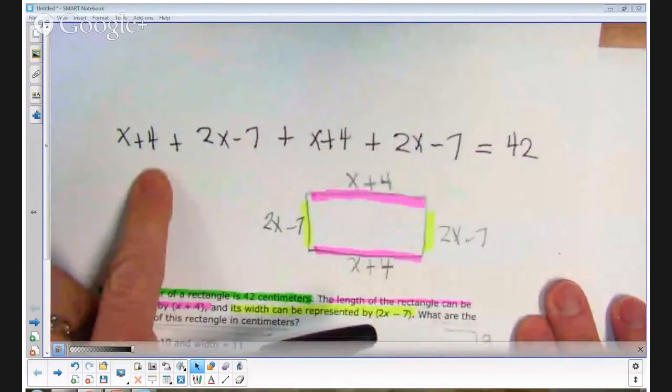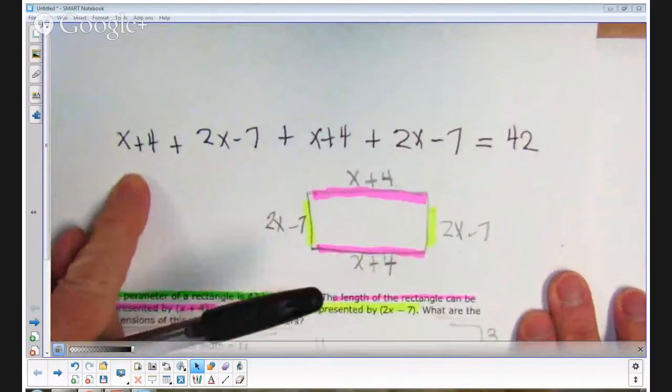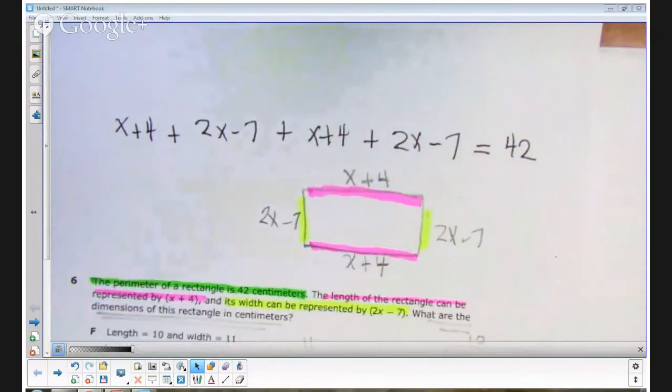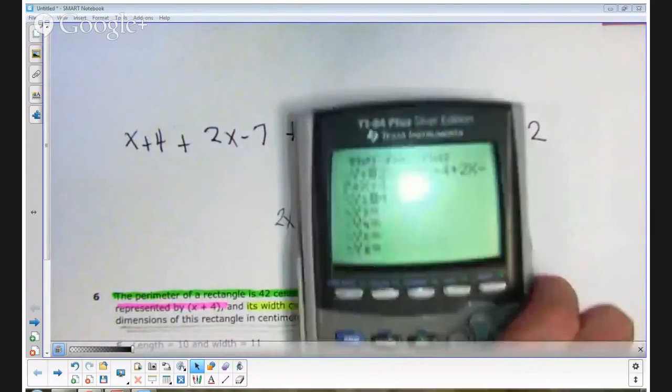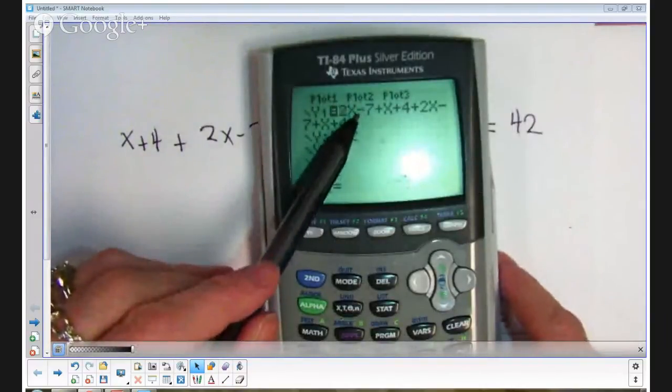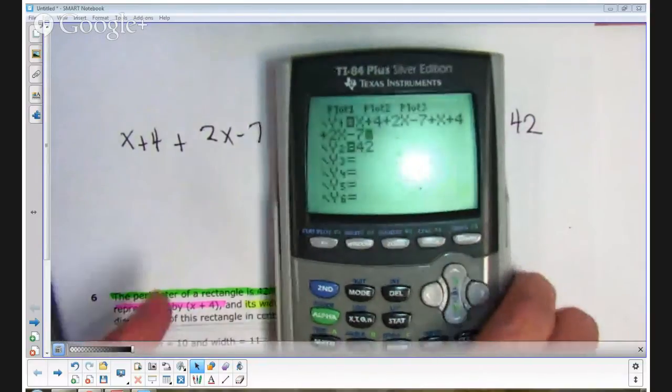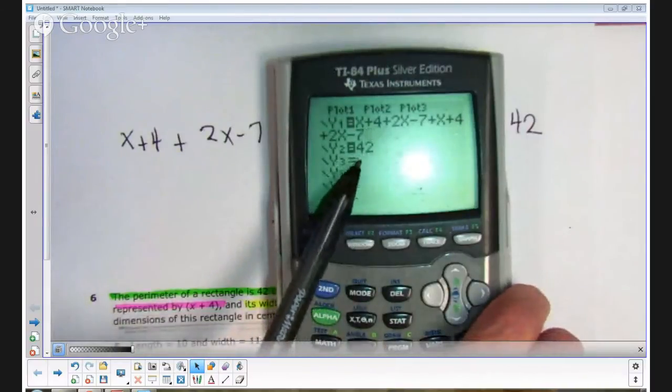Now how can I solve this using a graphing calculator? I could do it manually and that's fine if you're really confident with your solving skills. But you know, if you're taking a test like this and you need to graduate, you need to pass this to graduate and you've struggled in the past, it may be a wise decision to go ahead and put the whole thing into the graphing calculator. So let me show you what I've done here. I've gone to my y equals screen and I've put in the entire expression. I've actually got them backwards here. Let me type it over. x plus 4 plus 2x minus 7 plus x plus 4 plus 2x minus 7. Yeah, I kind of reversed the terms but that's okay. I had all of them in there. And then on y2 I've put the number 42.